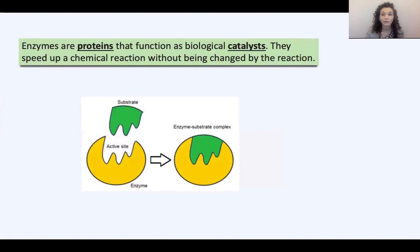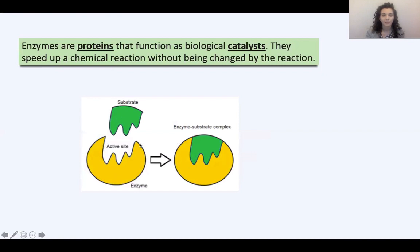Moving on to look at enzymes — the learning question is how do enzymes work. Enzymes are proteins and they function as a biological catalyst. A catalyst is something that speeds up a chemical reaction without being changed in the reaction — it's not changed, it's not used up, but it speeds up a reaction. We have lots of enzymes inside our body and they help to speed up lots of chemical reactions. They also help to digest different molecules of food for us. You can see here that the enzyme has a shape called an active site — a space inside it.